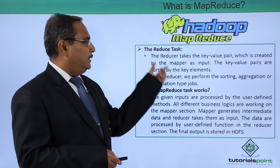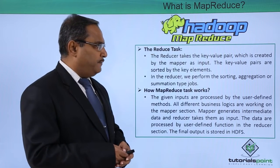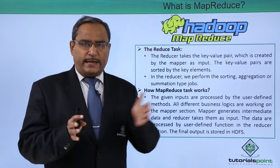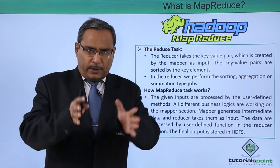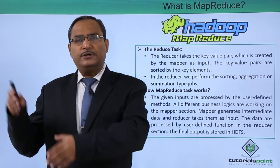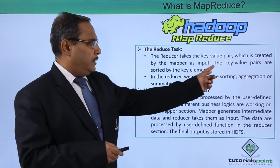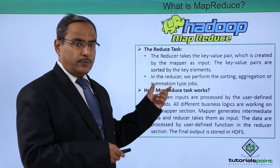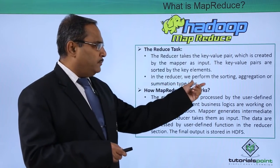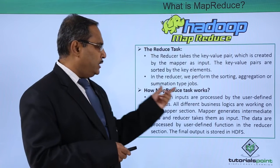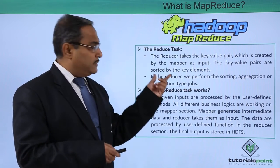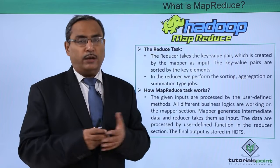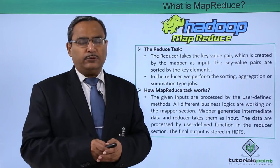Now we go to the reduce task. The reducer takes the key-value pair created by the mapper as input. The mapper's output will be the input to the reducer, and the reducer will produce the respective output accordingly. The key-value pairs are sorted by the key elements in the reducer, and in the reducer we perform sorting, aggregation, or summarization type of jobs — such as summation, counting, or maximum/minimum calculations.